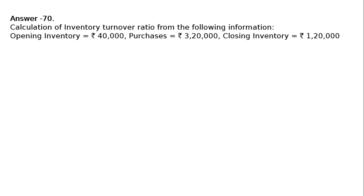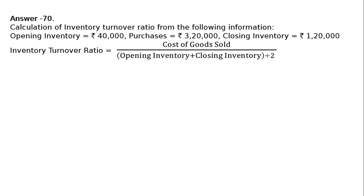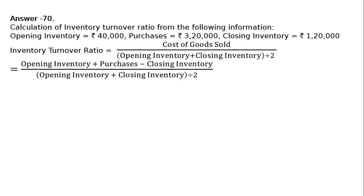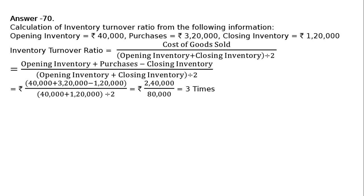The inventory turnover ratio equals cost of goods sold divided by average inventory, where average inventory is opening inventory plus closing inventory divided by 2. Cost of goods sold equals opening inventory plus purchases minus closing inventory: 40,000 plus 3,20,000 minus 1,20,000 divided by (40,000 plus 1,20,000) divided by 2, which equals 2,40,000 divided by 80,000, giving 3 times.